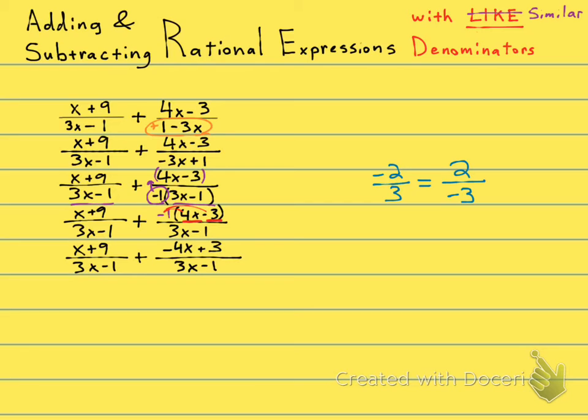Okay, I'm ready to put them together. All is one fraction. All over my common denominator of 3x minus 1. And now I'm going to have x plus 9 plus a negative 4x. Well, I'm just going to write that as a minus 4x plus a negative is a minus. And then I have plus a positive 3, which is plus 3.